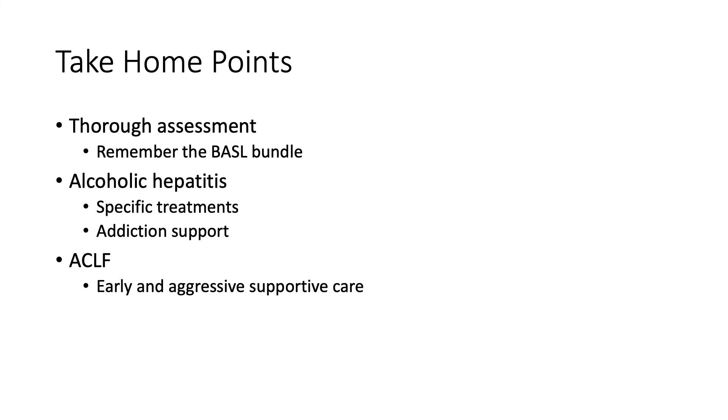The take-home points on this topic: firstly, patients with liver cirrhosis can decompensate and become quite unwell very quickly, so thorough assessment with attention to detail, particularly looking for infection, optimising nutrition, and using the bundle is important early on. Secondly, remember alcoholic hepatitis and the specific treatments in this group, and particularly the importance of getting addictions involved and helping maintain abstinence in the long term. Finally, be aware that acute on chronic liver failure is a relatively new phenomenon, but it does exist and there are new treatments emerging, so keep an eye out for further guidance.